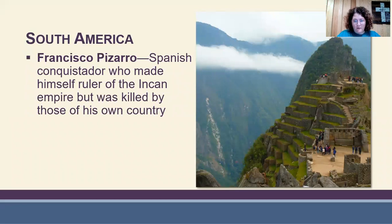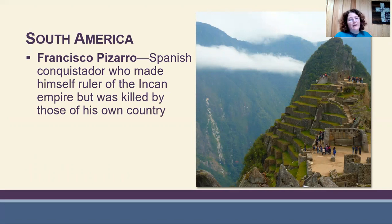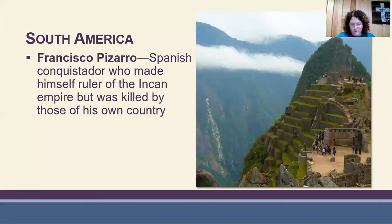Francisco Pizarro in South America proved to be even more brutal than Cortés. He traveled to the New World to find gold and used violent methods to seize it at every opportunity. He set himself up as ruler of the Incan Empire but was eventually killed by those of his own country.